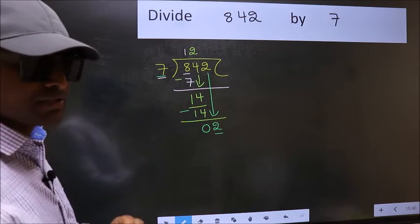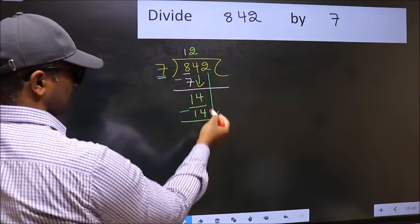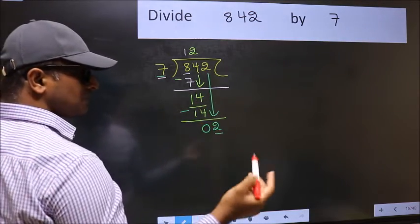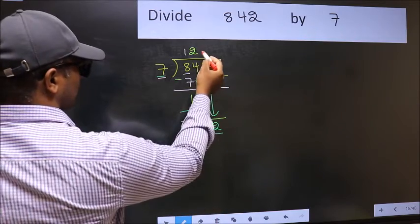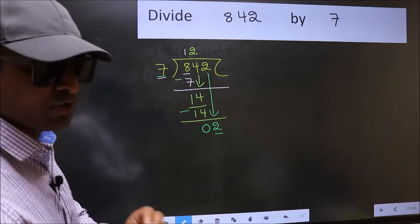Why is it wrong? Because, just now you brought this number down. And in the same step, you want to put dot and take 0. Which is wrong.